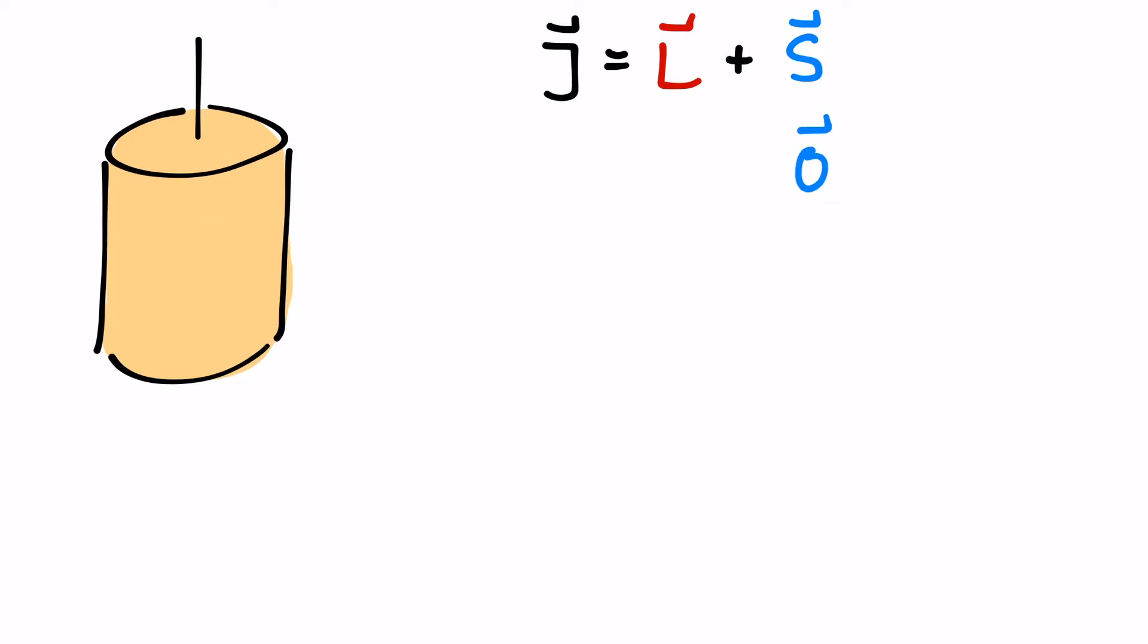And if the cylinder doesn't move, its total angular momentum is zero. Now we switch on a magnetic field. This makes every single spin of the cylinder point in the same direction and the cylinder starts to rotate.